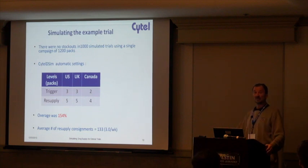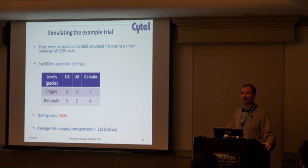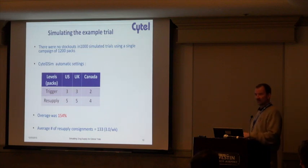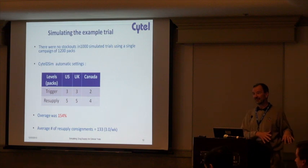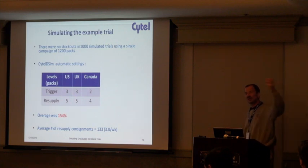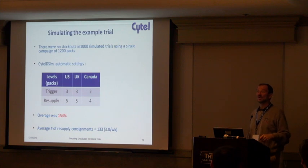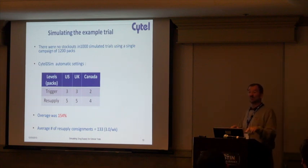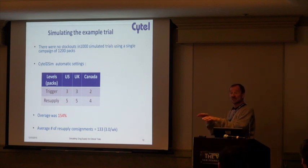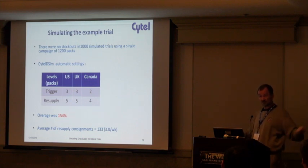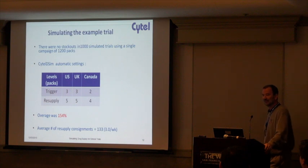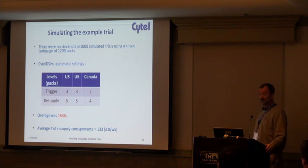Overage is the amount of drug that patients are not going to take. In order to supply those 470-some patients at the given doses, we need to send out 154 percent more drug than those patients will actually need — to ensure that none of the sites have a stockout, because the depots must always maintain a minimum supply on hand in case multiple patients arrive in the same week. The average number of resupply consignments at three per week was 133.